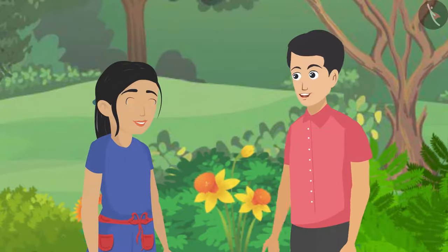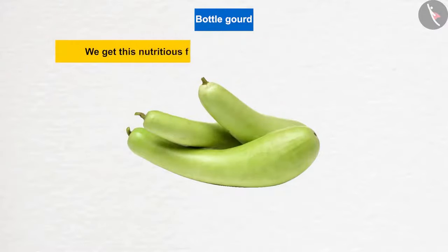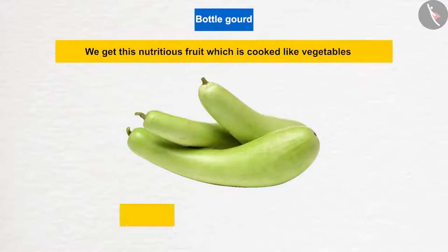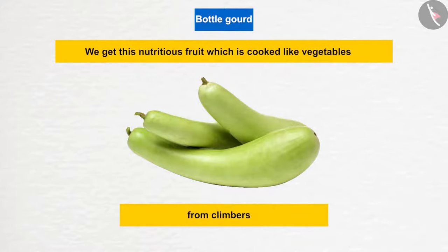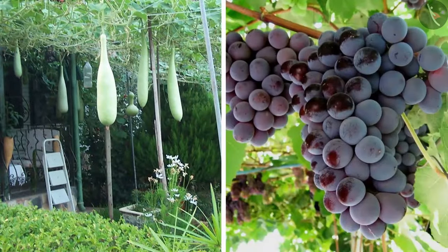Climbers are vines that climb up trees, ladders, or other solid structures around them. A nutritious fruit that is cooked like a vegetable comes from climbers. Bitter gourd is also a climber. Grapevine is also a climber.